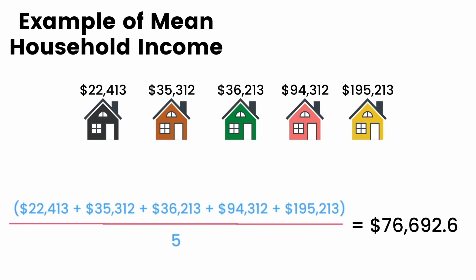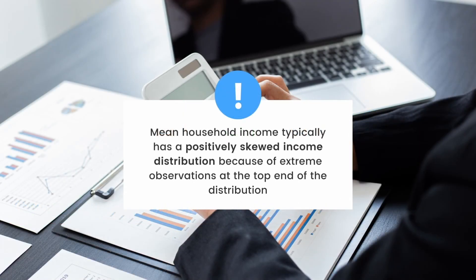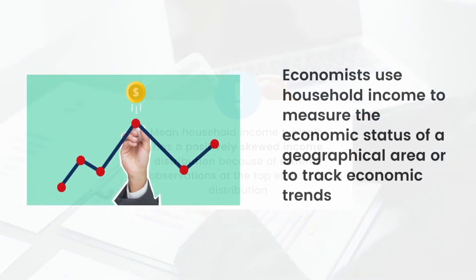However, it's important to know that mean household income typically has a positively skewed income distribution. This is because of extreme observations at the top end of the distribution. Economists use household income to measure the economic status of a geographical area or to track economic trends.